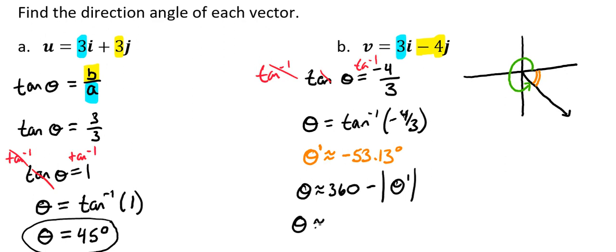So theta equals 360 subtract the absolute value of negative 53.13, which is 53.13, and that gives us 306.87 degrees.